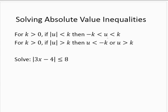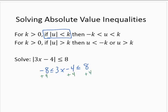So here we have the absolute value of 3x minus 4 is less than or equal to 8. Since this is of the form absolute value of u is less than k, I can rewrite this as a three-part inequality. I would have 3x minus 4 inside, and on the outside I put the opposite of the number and the number itself. Now I solve this three-part inequality. The first step is to add 4 to all three parts of the inequality, yielding negative 4 is less than or equal to 3x is less than or equal to...